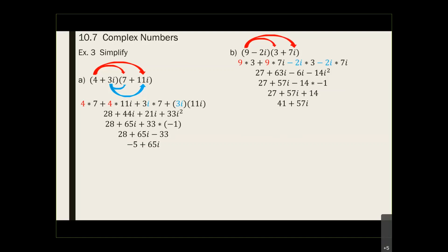This is the last example we have in Chapter 10. Before the next problem — any questions? Hopefully you see that it's just math recycling our previous procedures. The problem looks new but we just recycle all previous procedures. Combining like terms — that's not new. FOIL — that's not new. The only thing new is i squared: i squared becomes negative 1, then combine like terms again.